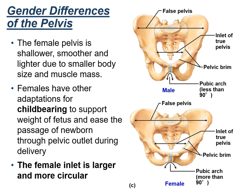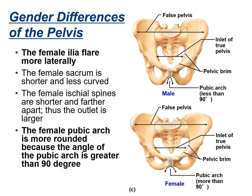A skeleton's sex can be determined based on differences between the male and female pelvises. The pelvic inlet is wider and more circular in females and narrower in males. The ilia flare laterally in females but not as much in males. The pubic arch is greater than 90 degrees in females and less than 90 degrees in males. The acetabulae are further apart in females and closer together in males. The ischial tuberosities are everted in the female pelvis and inverted in the male pelvis. The coccyx is straighter and more movable in females compared to less movable in males.